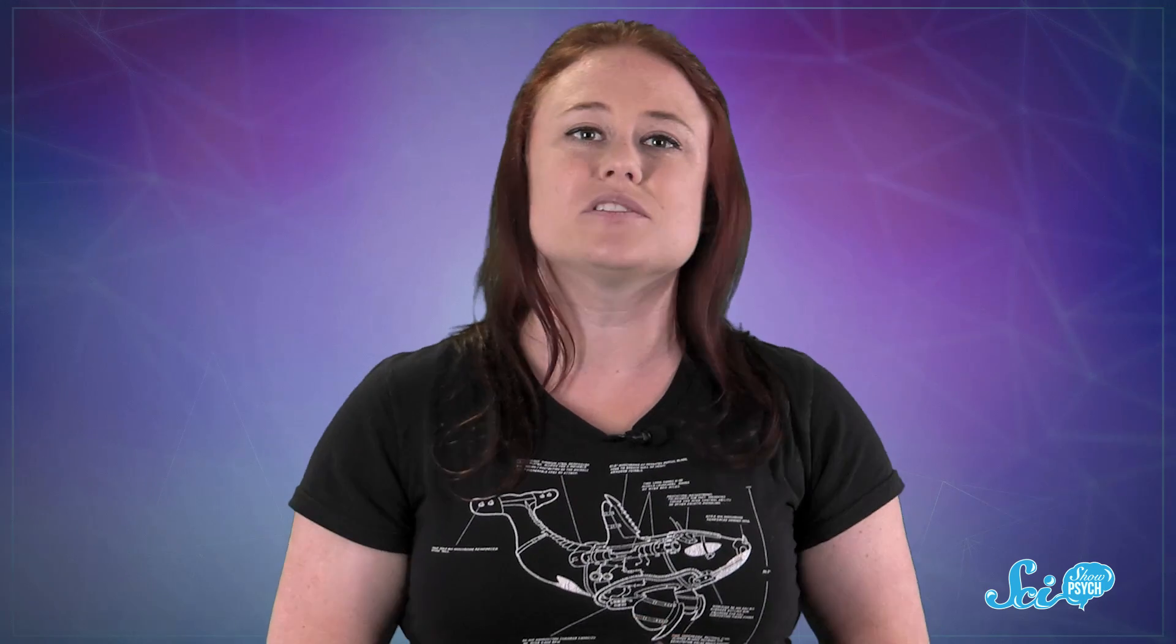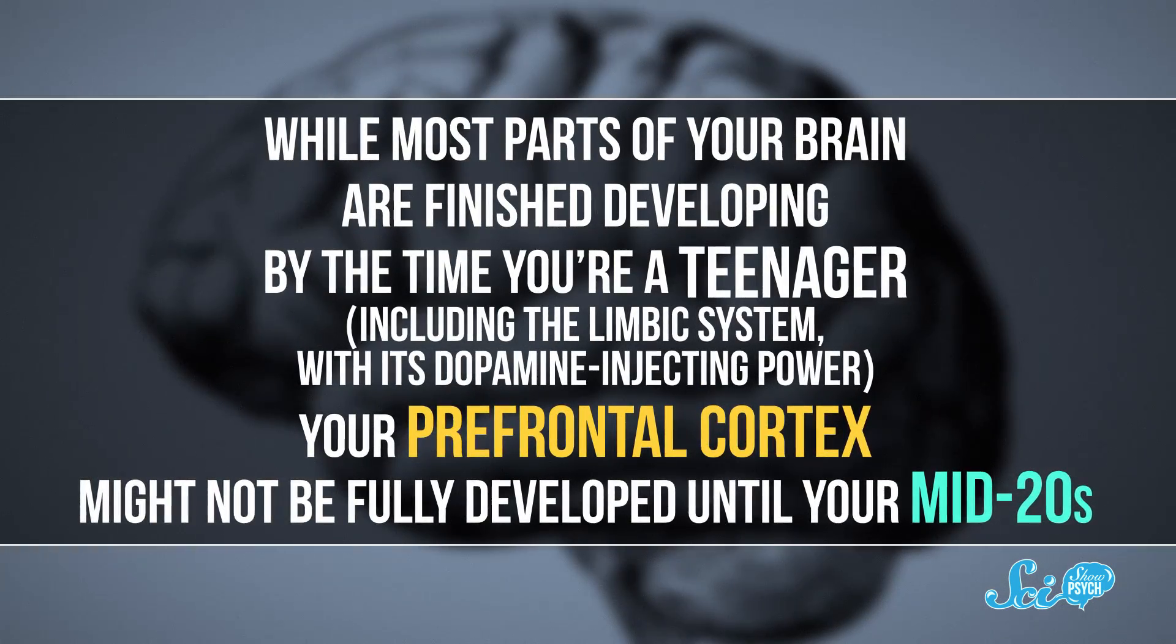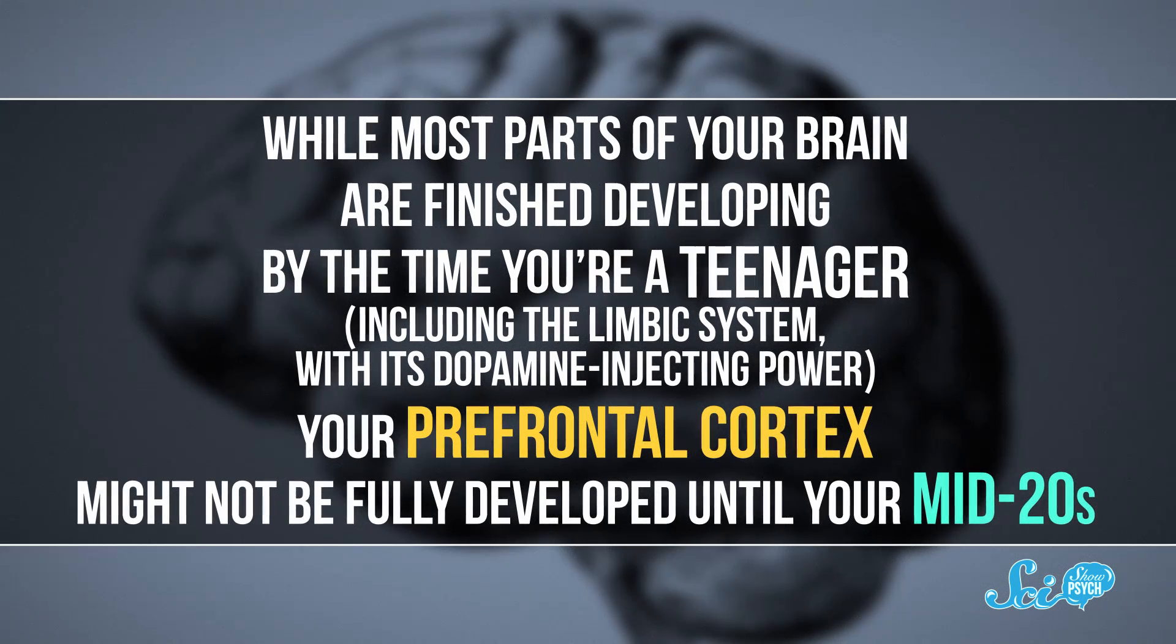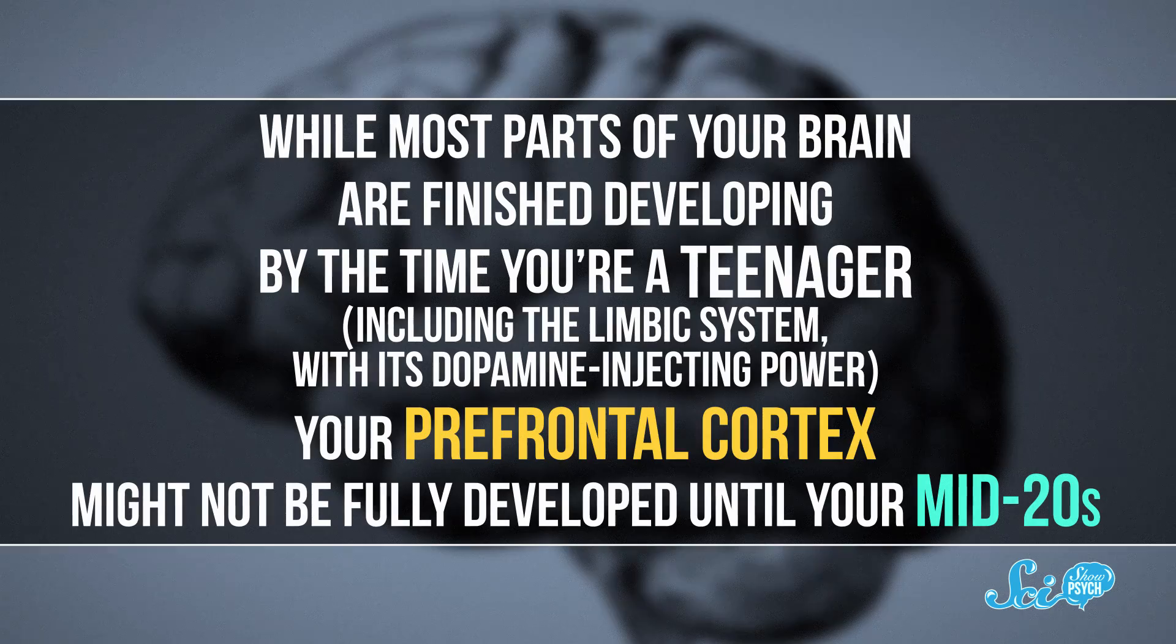That helps explain why adolescents tend to take more risks than adults do. While most parts of your brain are finished developing by the time you're a teenager, including the limbic system with its dopamine-injecting power, your prefrontal cortex might not be fully developed until your mid-twenties.